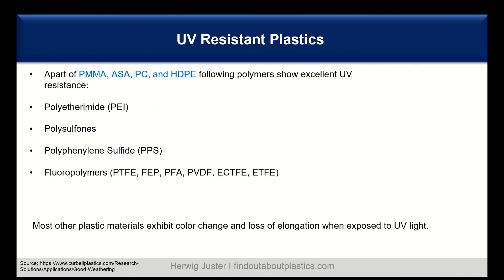We have already discussed the UV resistance of PMMA, ASA, PC, and HDPE. There are further UV-resistant polymers — for example, polyetherimide, polysulfones, polyphenylene sulfide (PPS), and also fluoropolymers like PTFE — which are all excellent in terms of UV resistance. When you compare those to other plastics, the other plastics exhibit color changes and also loss of elongation and loss of mechanical strength.